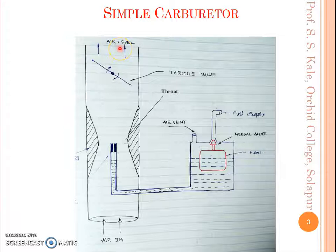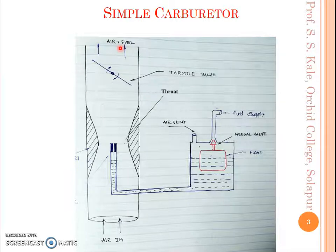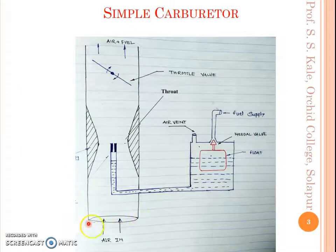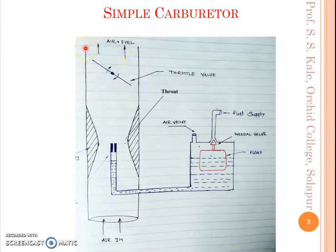Now I am showing here a simple figure of the carburetor. There are two figures actually — a simple carburetor and a complete carburetor. In the simple line diagram, you can see a tube; one opening of this tube is open to the air and the other opening is connected to the intake manifold of the engine.